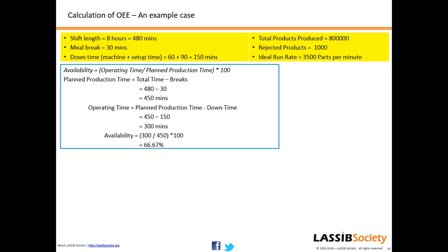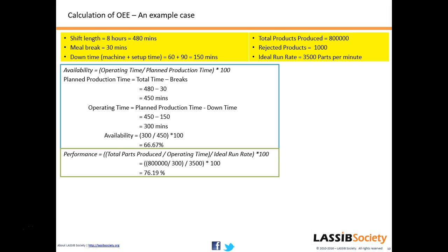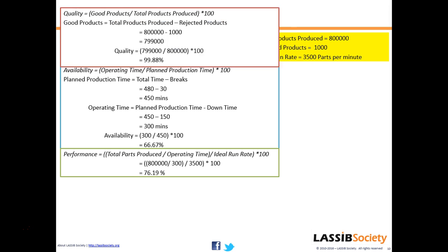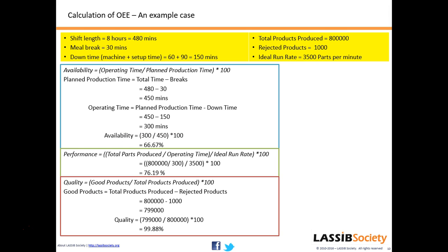For Performance: total parts produced divided by operating time, divided by the ideal run rate × 100. That is 800,000 divided by 300, divided by 3,500 × 100 = 76.19%. For Quality: good products divided by total products × 100. We produced 800,000 and 1,000 were rejected, so 799,000 divided by 800,000 × 100 = 99.88%.